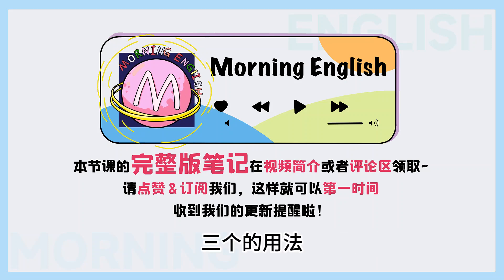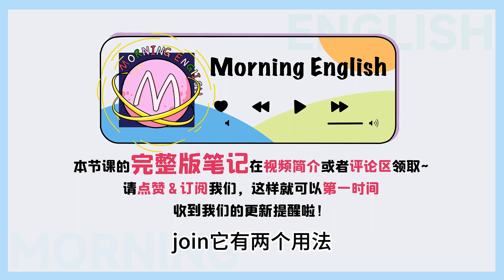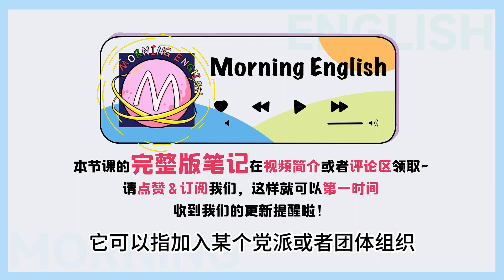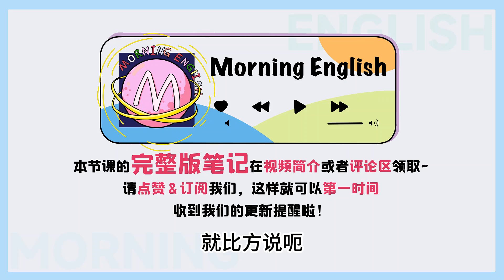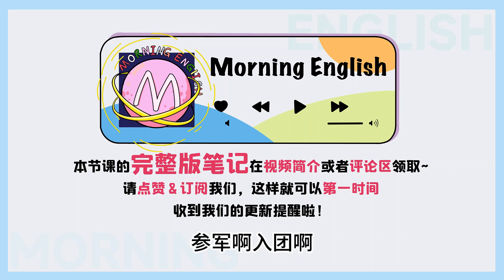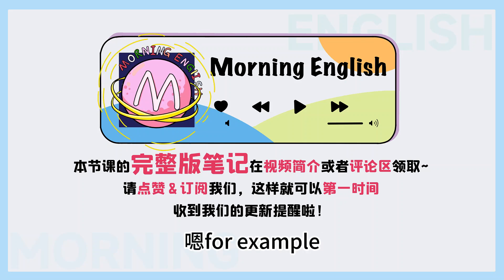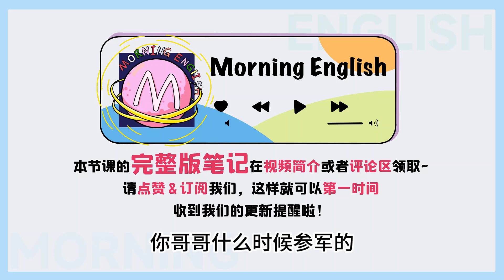那今天我就和大家一起来梳理一下它们三个的用法。首先来看 join。Join 它有两个用法。第一个，它可以加入某个党派或者团体组织，成为里面的成员之一，就比方说参军啊、入团啊、入党啊这些情况。For example, when did your brother join the army? 你哥哥什么时候参军的？